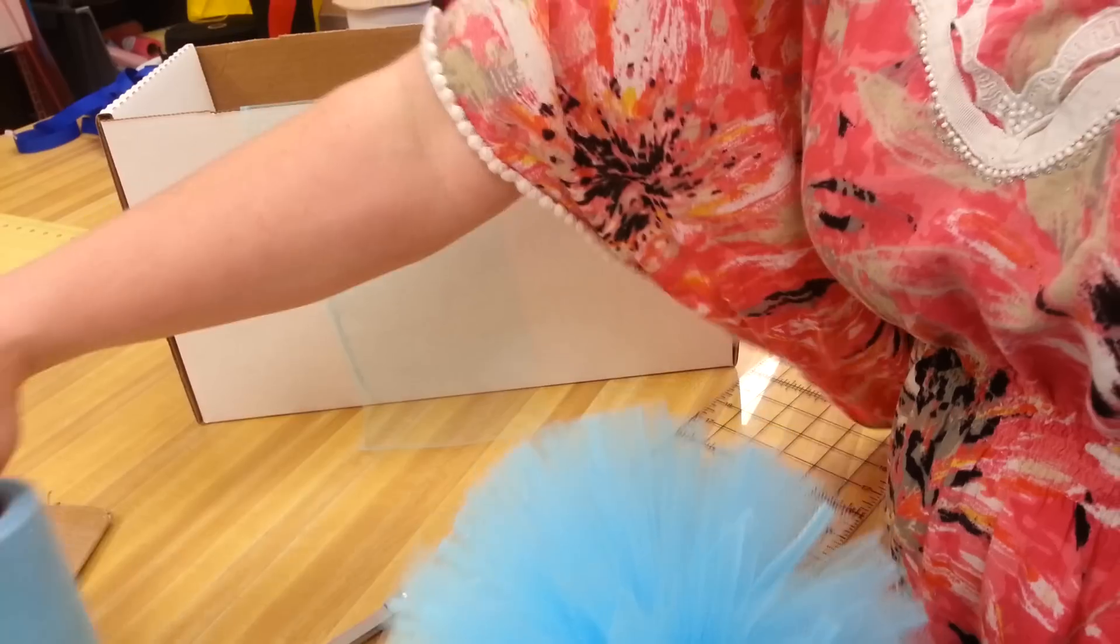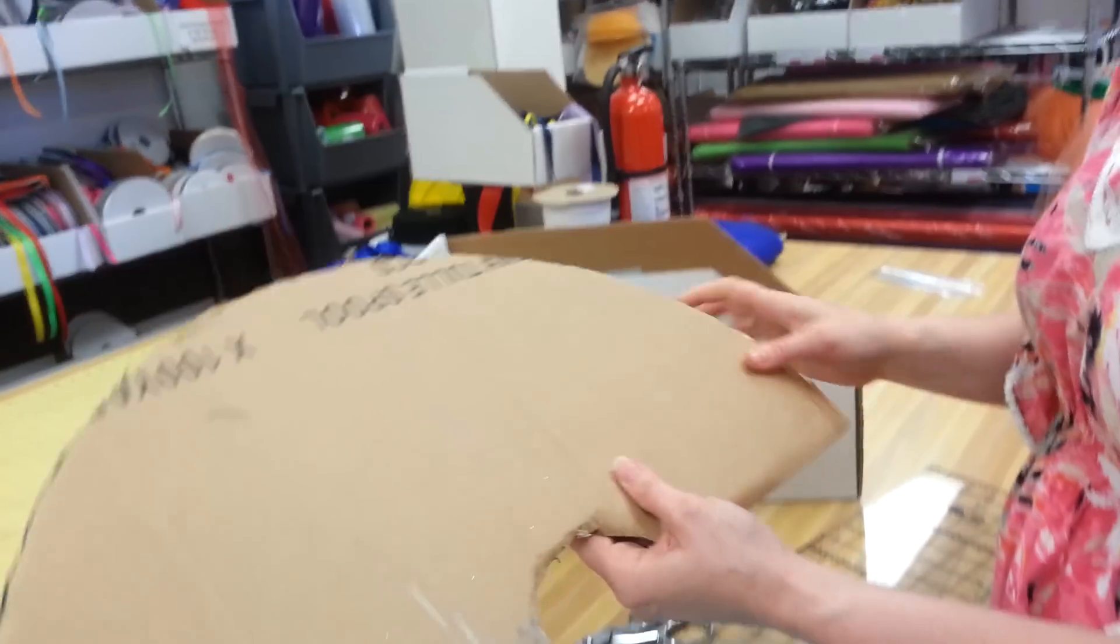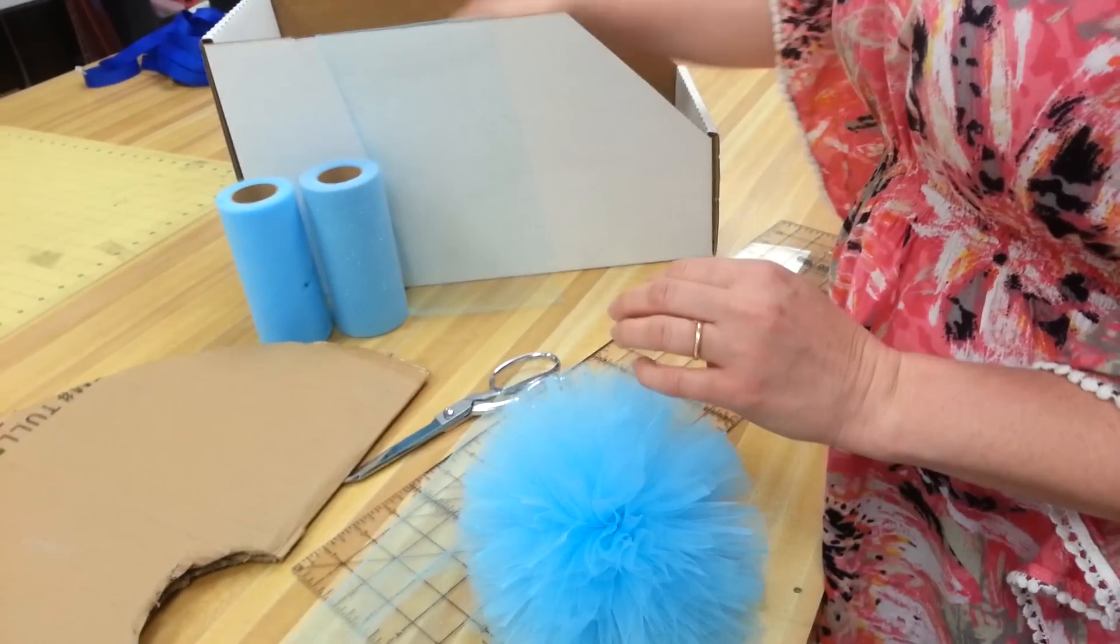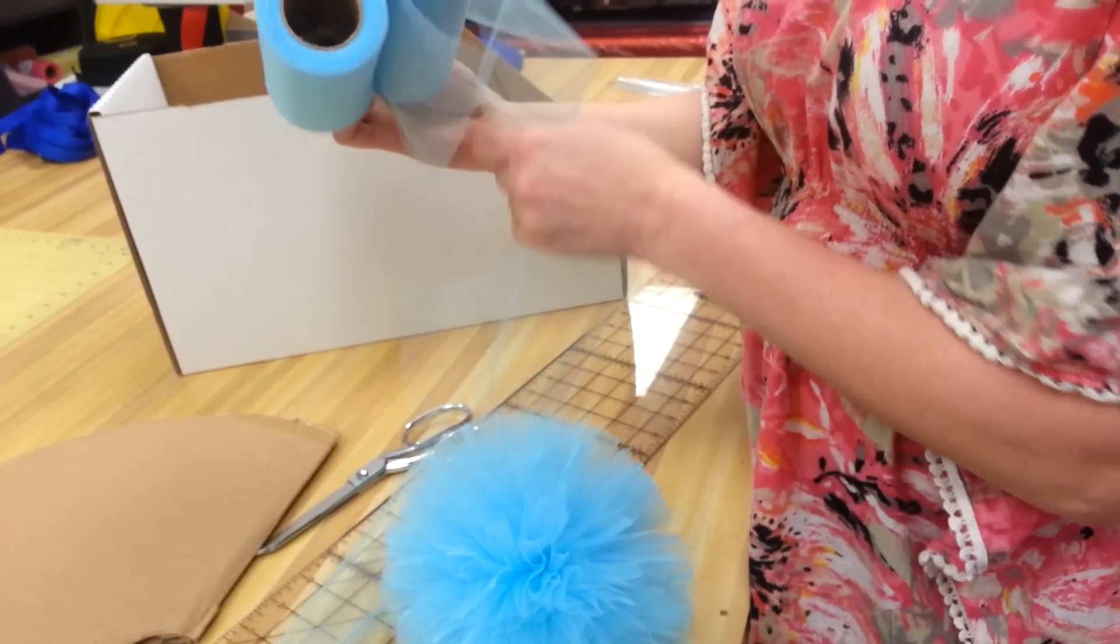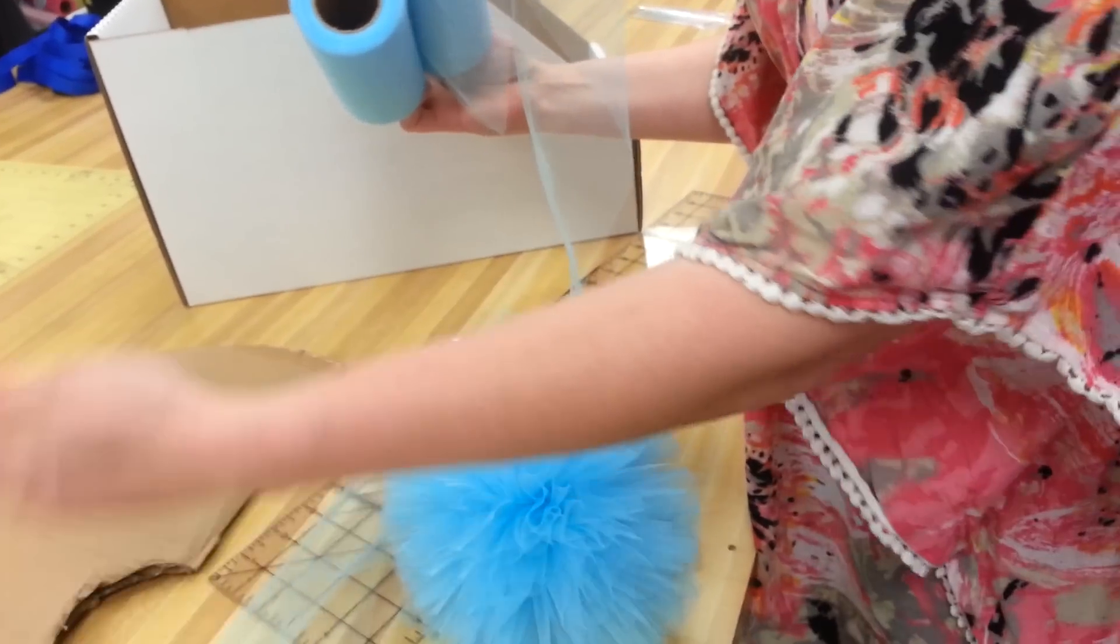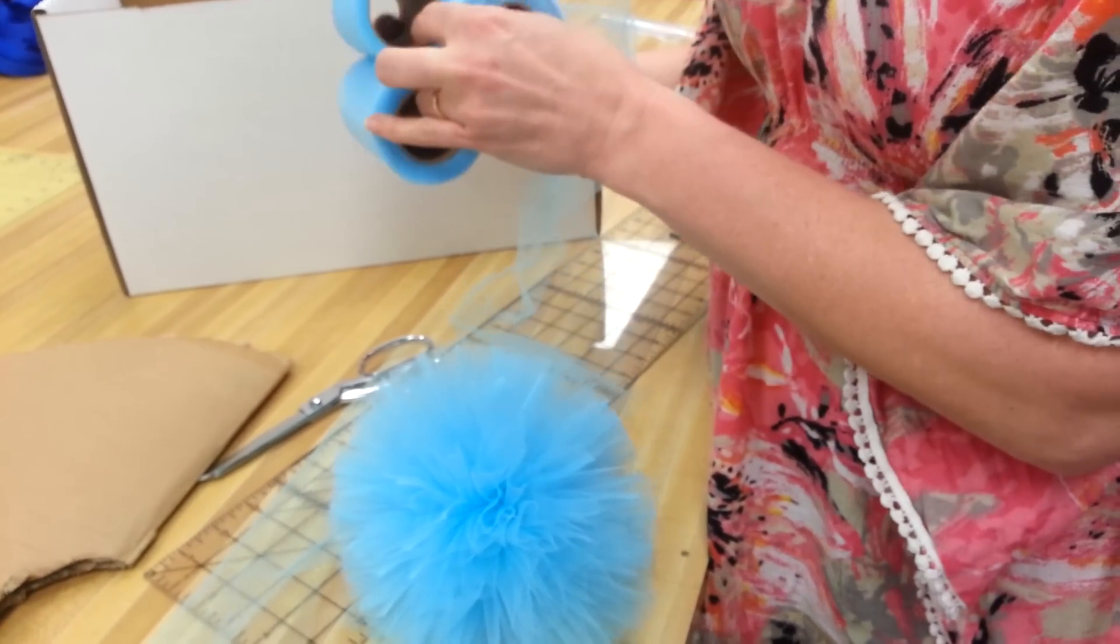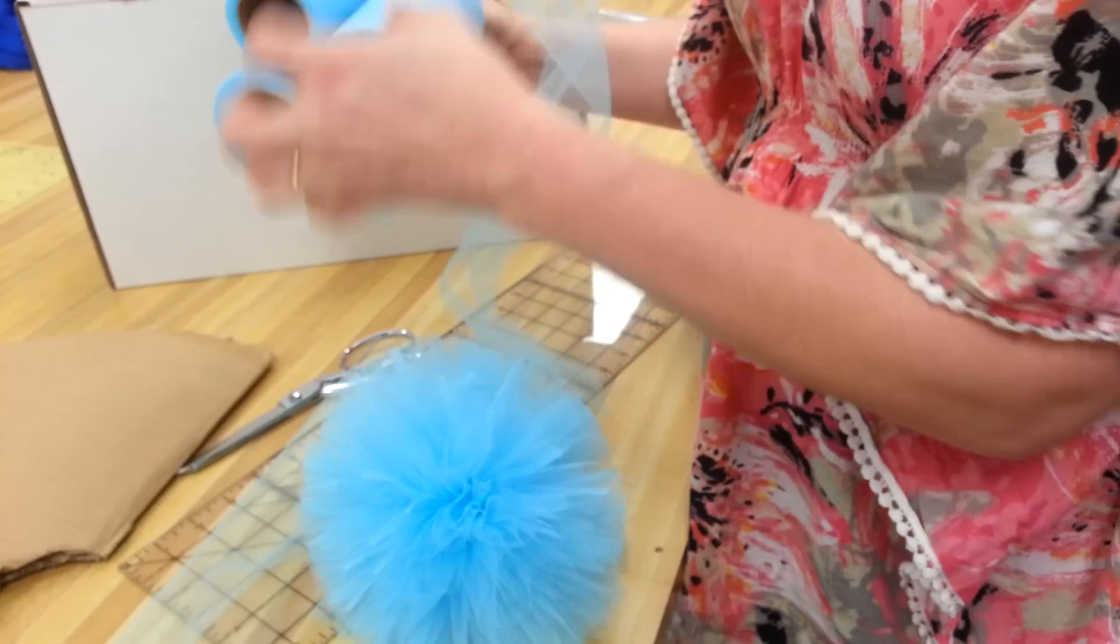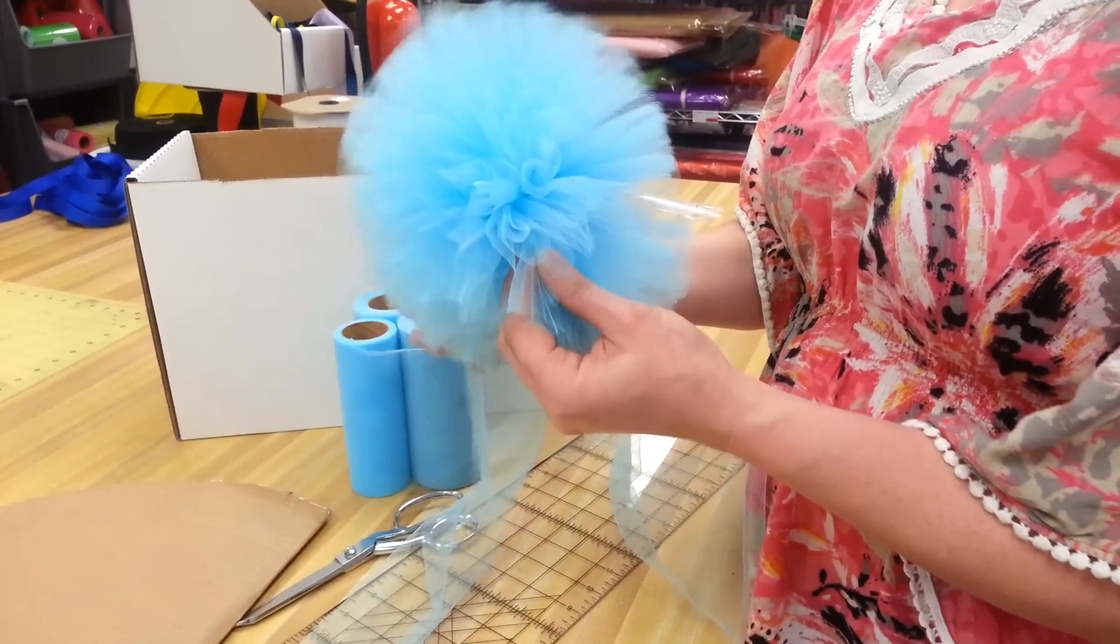If you want to do a bigger one, we make a 22 inch tulle pom-pom here in the store and we just use a cardboard box. And because it takes three passes, we generally work with three rolls at a time so that we only have to do one pass. And you just pull up all of them at the same time. So anyway, that's how you make a tulle pom-pom. I hope you enjoy it.